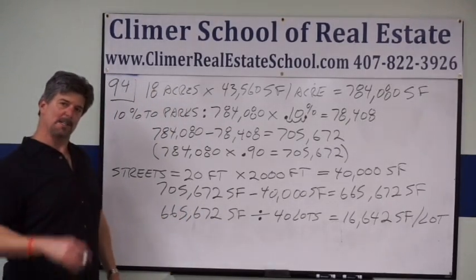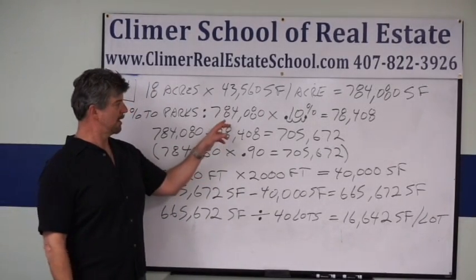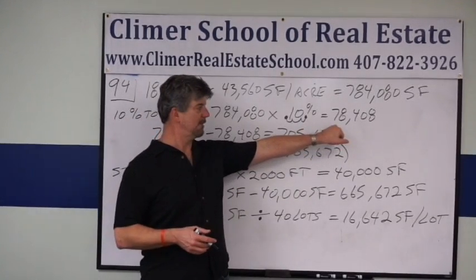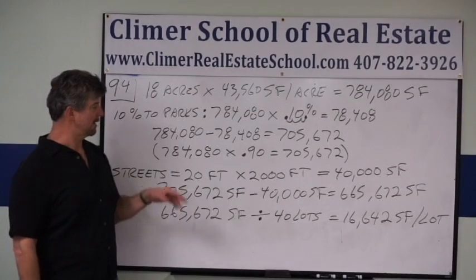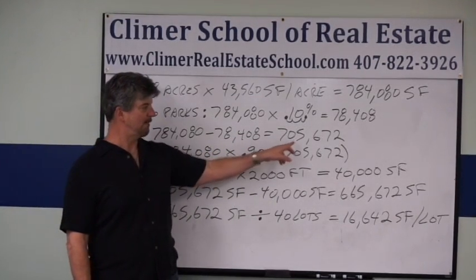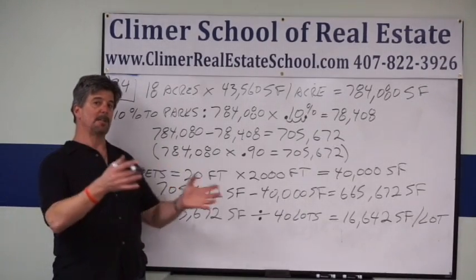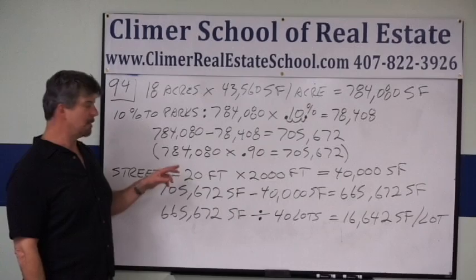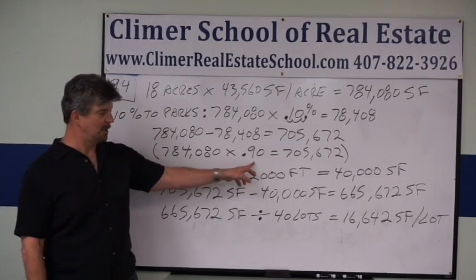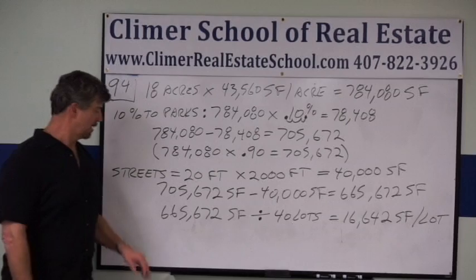Now we've got to take out the 10%. How do I know that there's 10% taken out? Because the problem tells us. There's two ways you can do it. Here's the first way. Multiply the total amount of square feet, 784,080 times 10%. That gives you 78,408. Then you can subtract. 784,080 minus 78,408 gives you 705,672 square feet. Or if you're seeing it in a different way, if there's 10% taken out, that leaves 90%. So you can multiply 784,080 square feet times 90% or 0.9, which gives you 705,672 square feet, the exact same number. Here's what we're working with now.